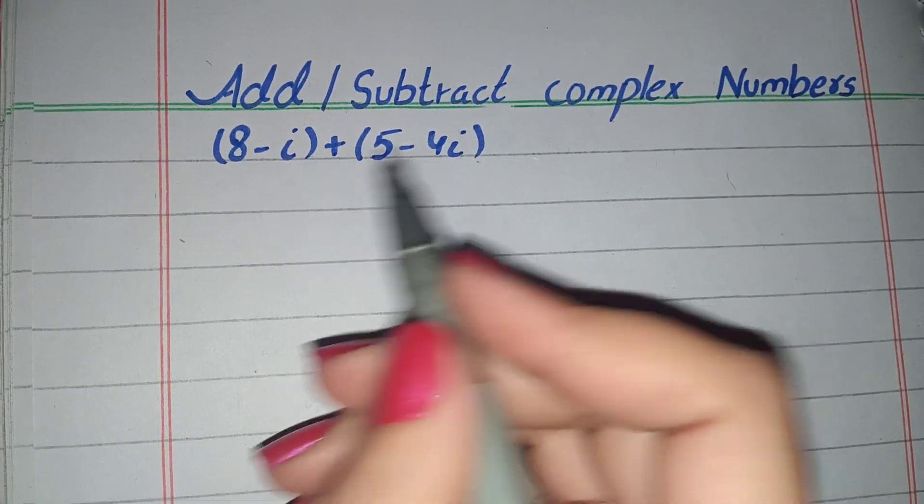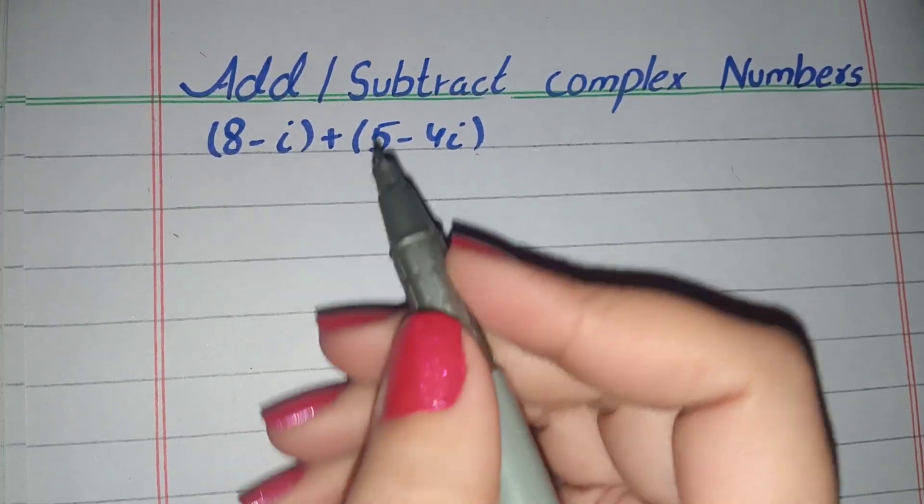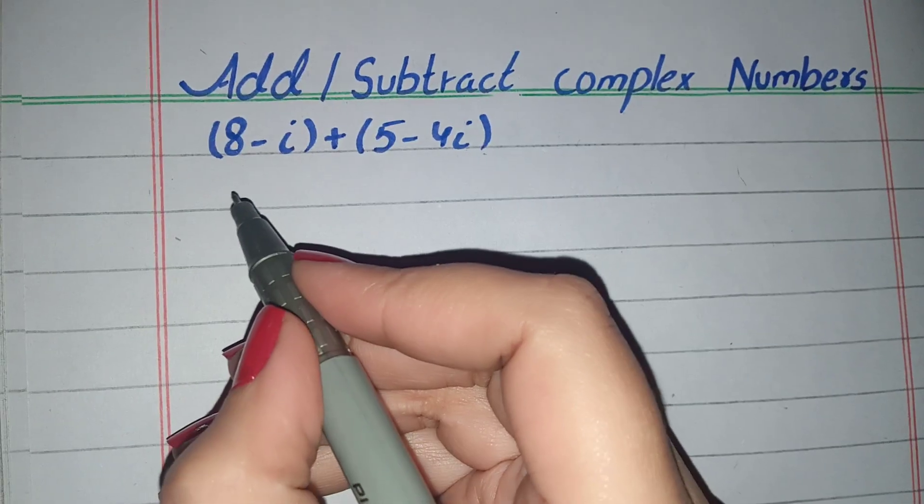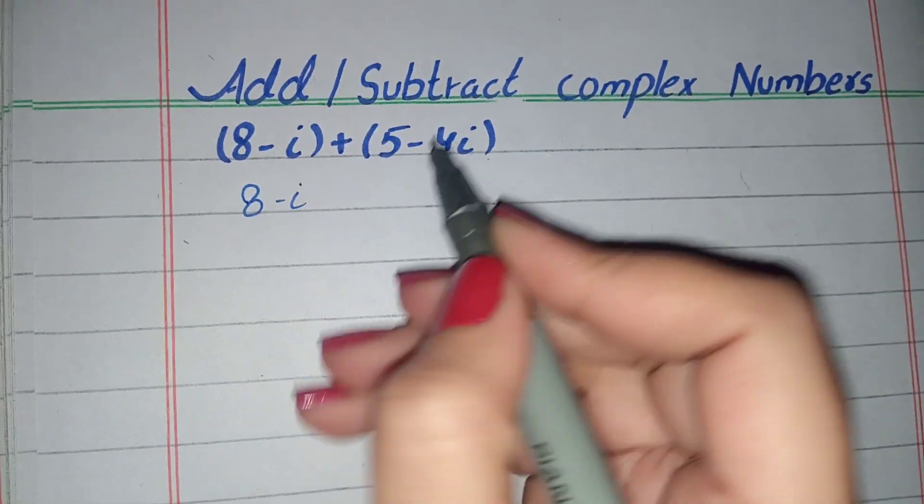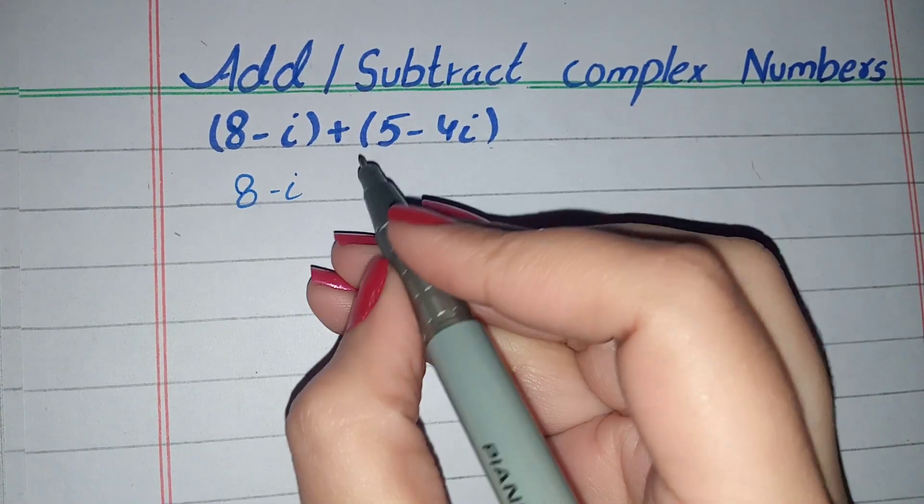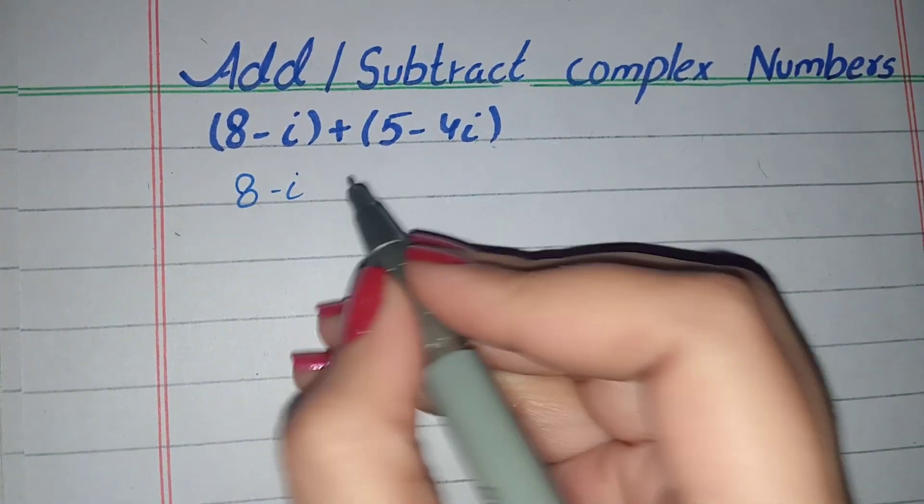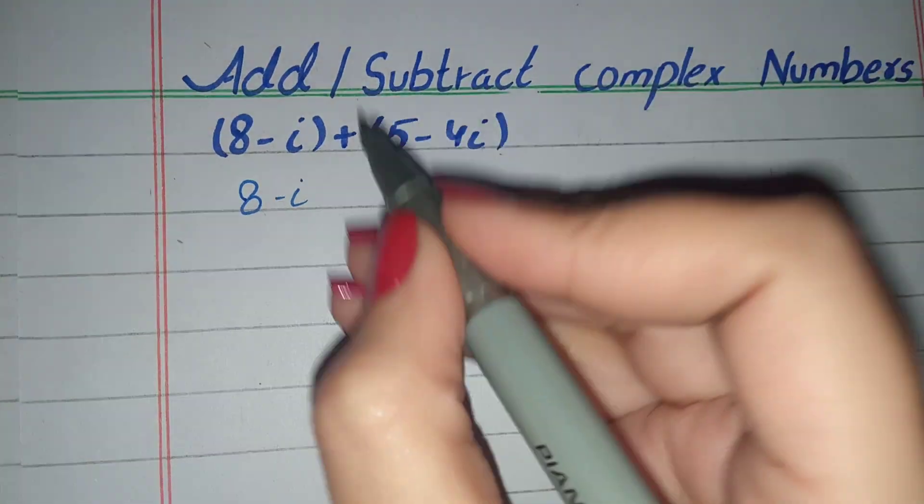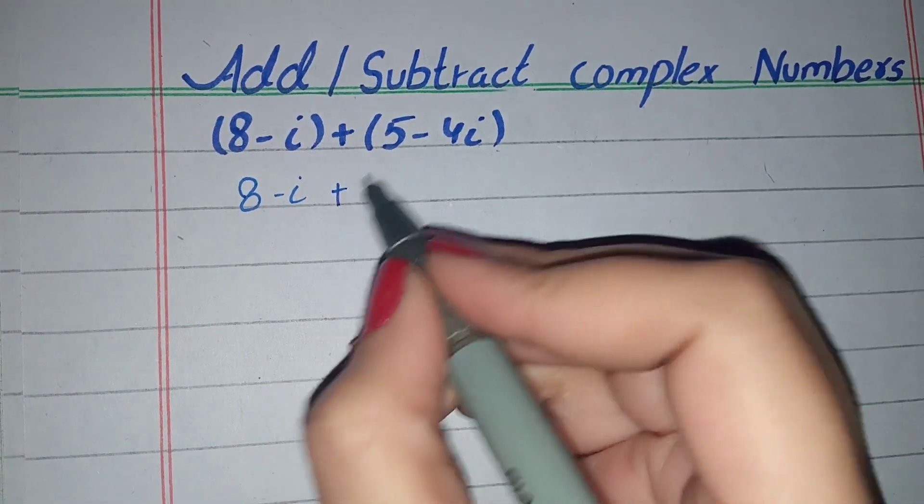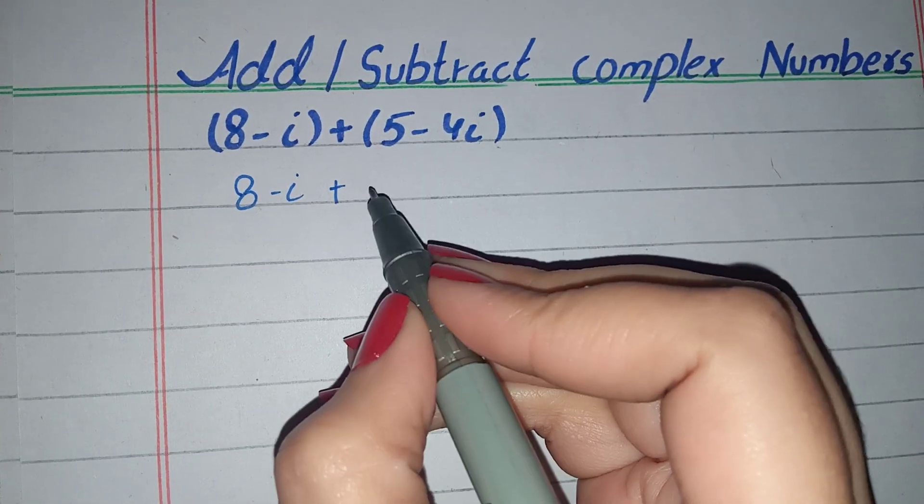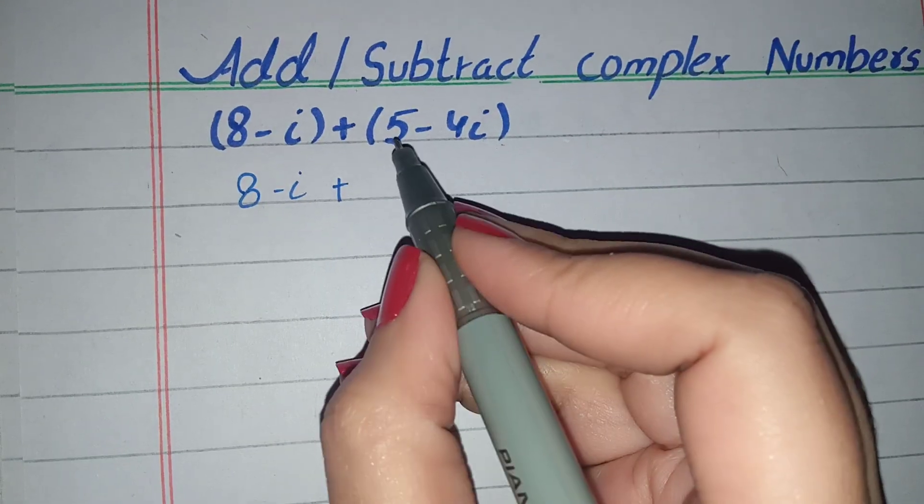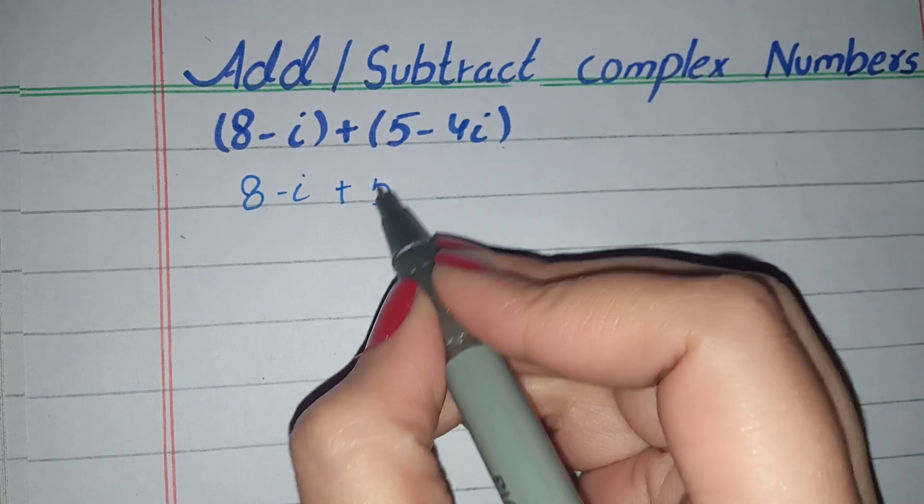Between the two brackets we have a positive sign. So in the first step, we will open this bracket and this bracket. There is a positive sign, so we will not change the signs inside the brackets.